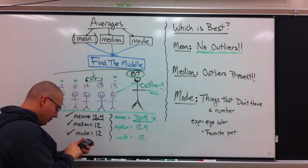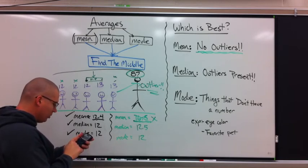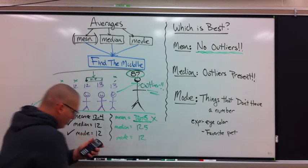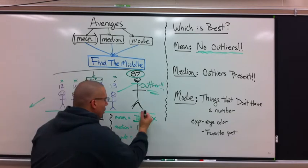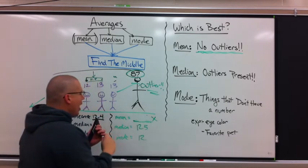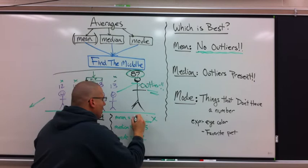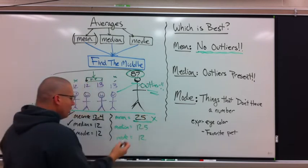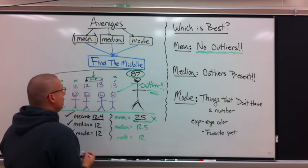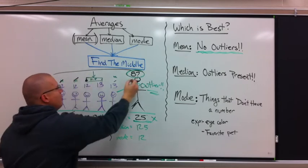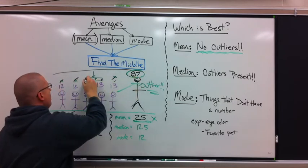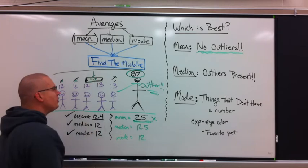Now watch what happens. 36 plus 26 plus 87 equals 149 divided by 6 equals... Now the average age in here is 25. Watch what the median does. One, two, three. One, two, three. Hey, the median didn't change at all.